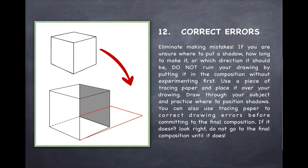Number 12, correct errors. Eliminate making mistakes. If you're unsure where to put a shadow, how long to make it, or which direction it should be, do not ruin your drawing by putting it into the composition without experimenting first. Use a piece of tracing paper and place it over your drawing. Draw through your subject and practice where to position shadows. You can also use tracing paper to correct drawing errors before committing to the final composition. If it doesn't look right, do not go to the final composition until it does.